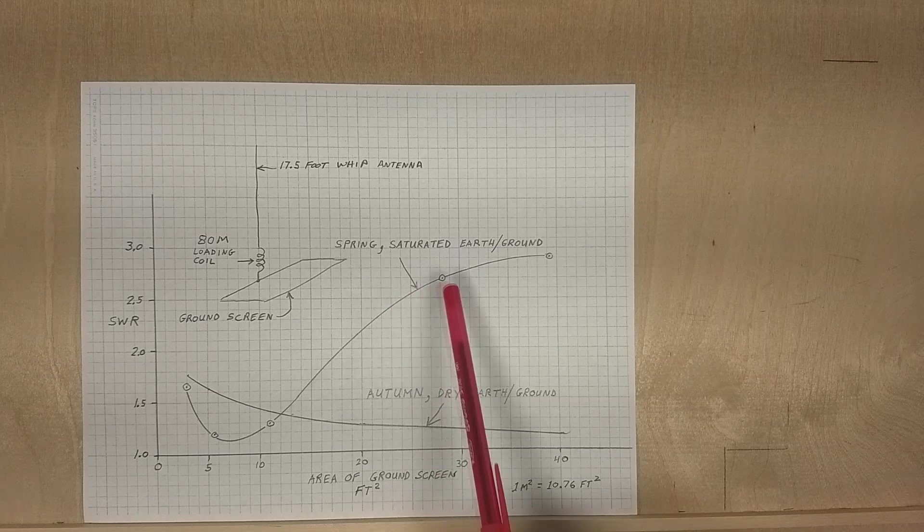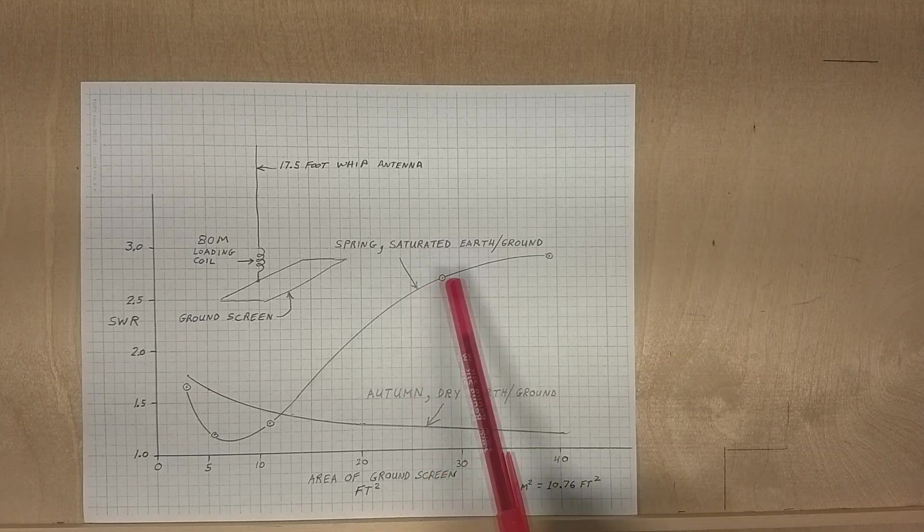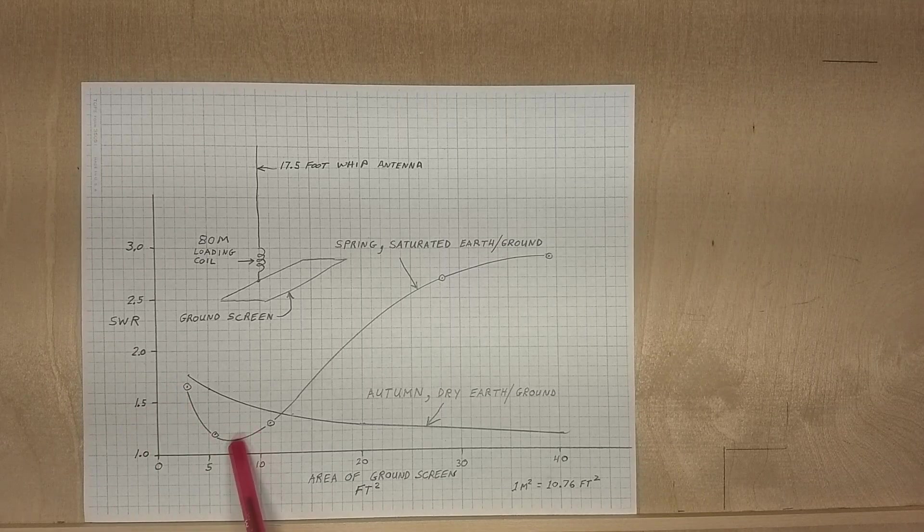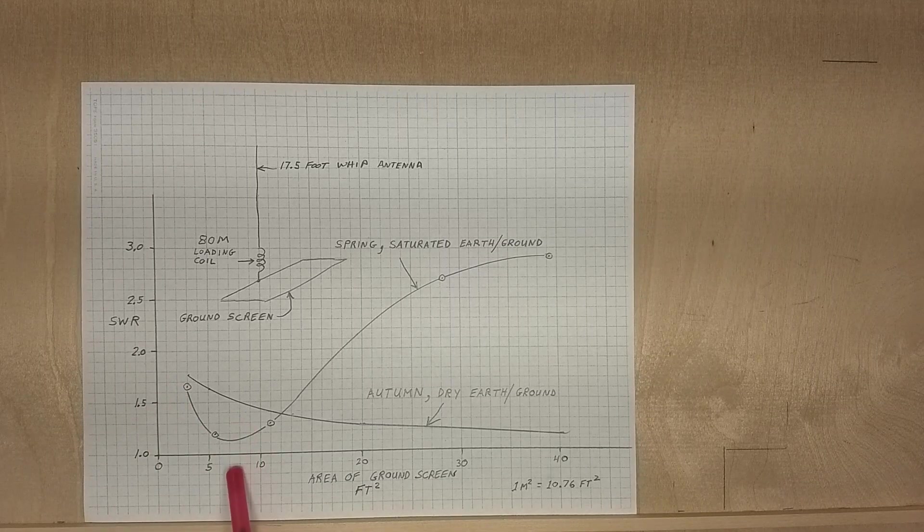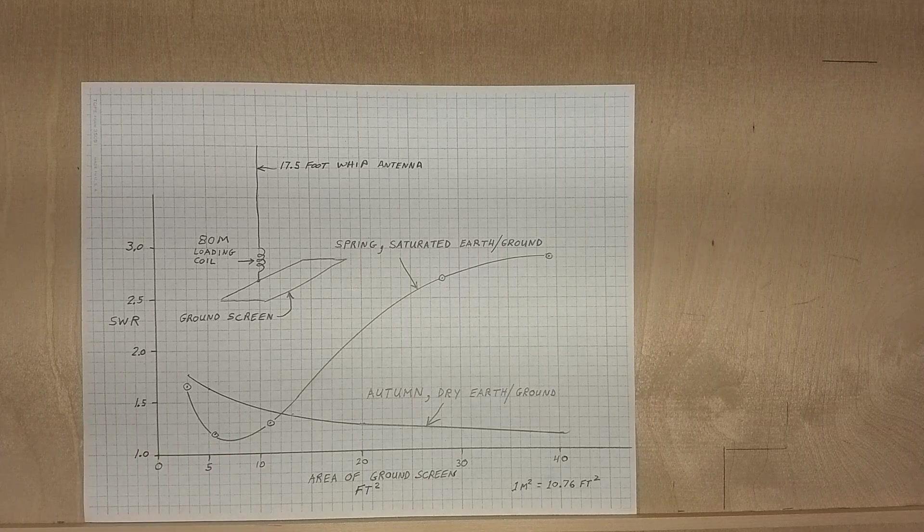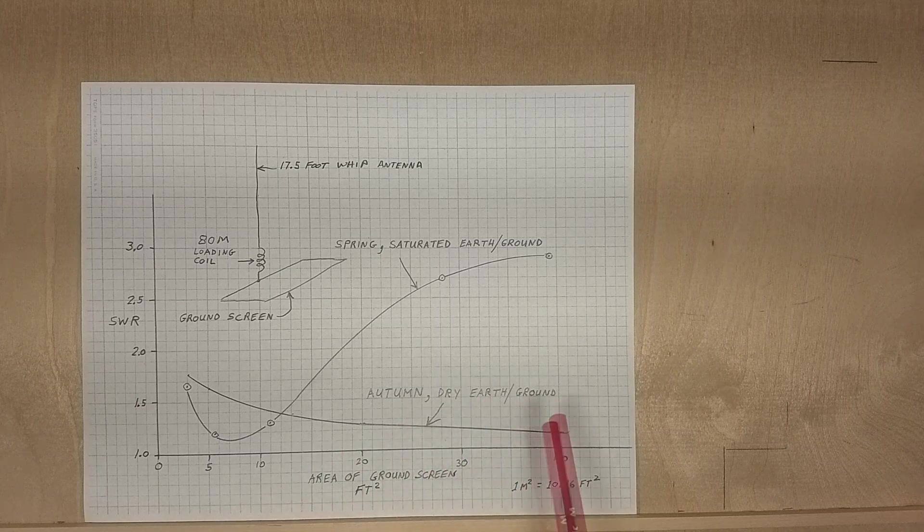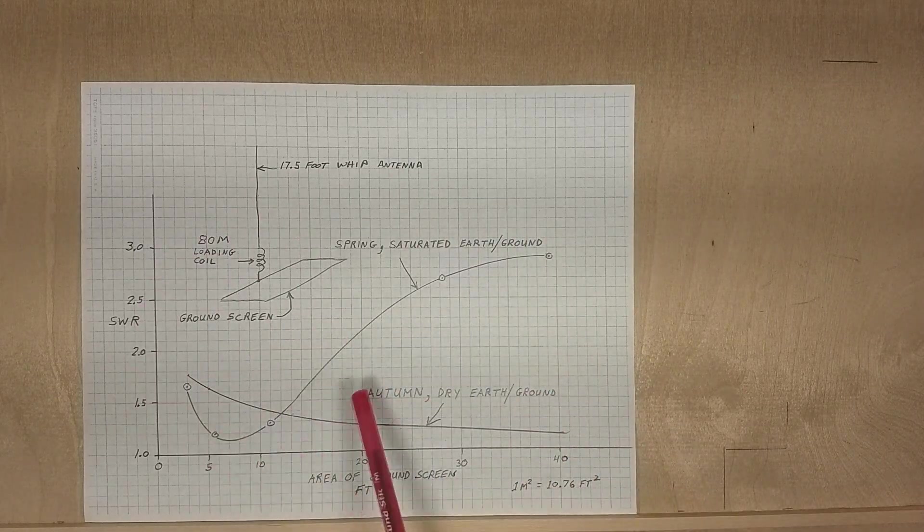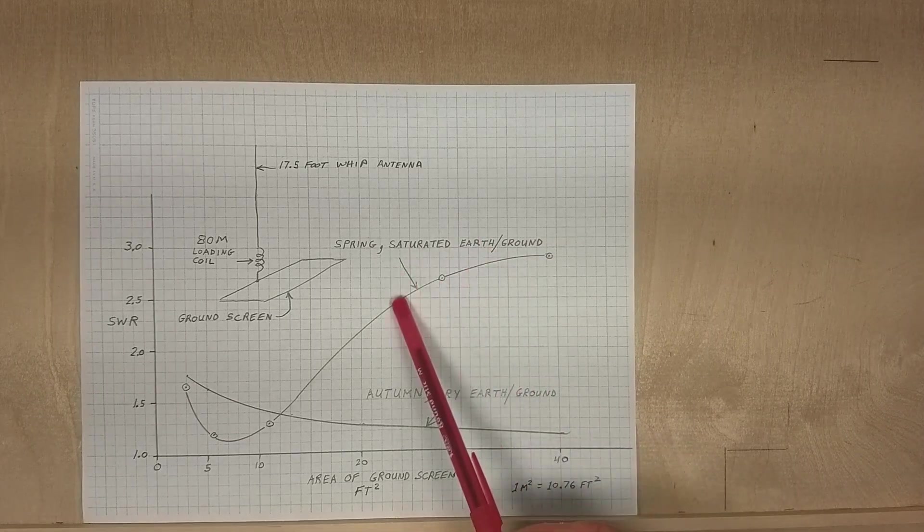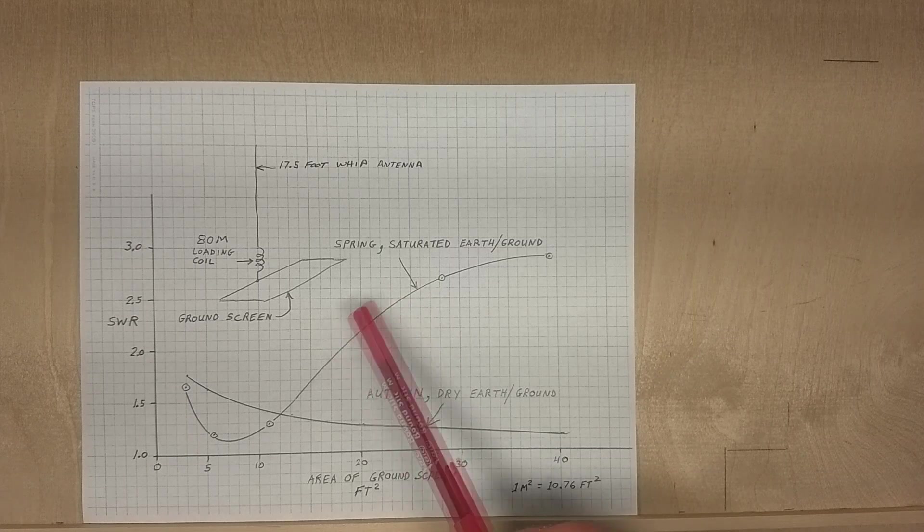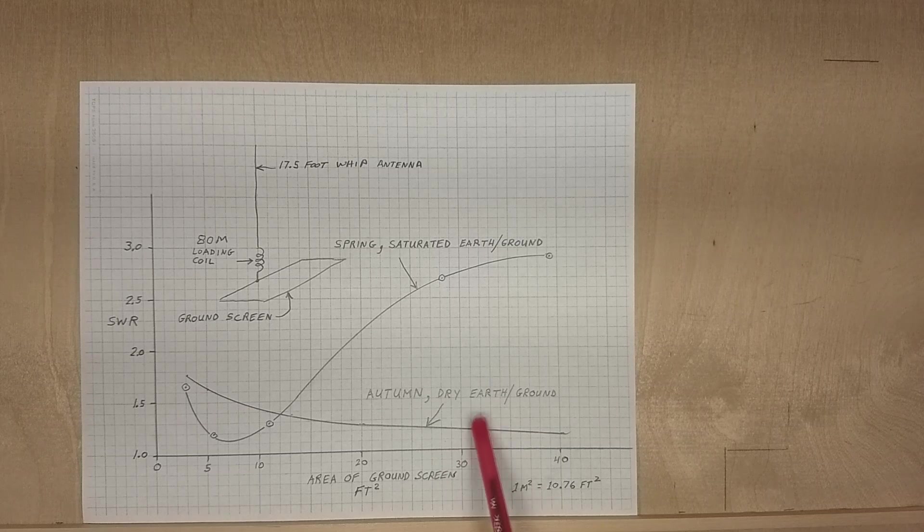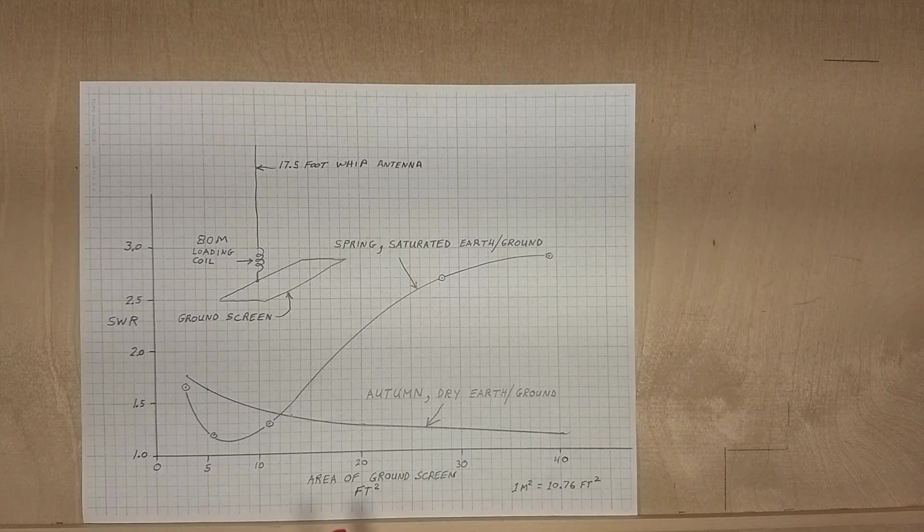The curve for the data that I just showed you looks like this. There's some optimum area here, looks like around seven square feet, that gives us the lowest possible SWR. This is at exactly the same location, the only difference being here in the spring the ground was really soggy and saturated from a lot of rain, and in the fall it was very dry from lack of rain.